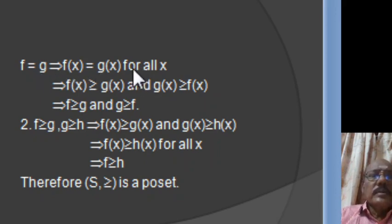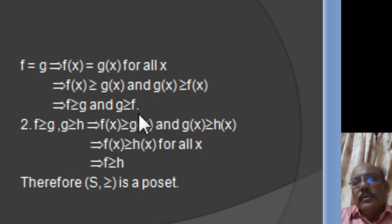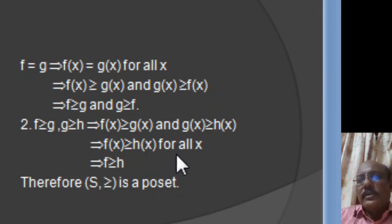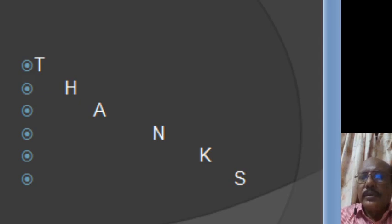So if F ≥ G and G ≥ F implies F = G, the relation is anti-symmetric. Also, F(x) = G(x) implies F(x) ≥ G(x), so the relation is reflexive. Now suppose F ≥ G and G ≥ H. Then by definition, F(x) ≥ G(x) and G(x) ≥ H(x), which implies F(x) ≥ H(x) for all x, so F ≥ H. Therefore this relation ≥ is transitive, and hence (DS, ≥) is a poset. Thank you very much.